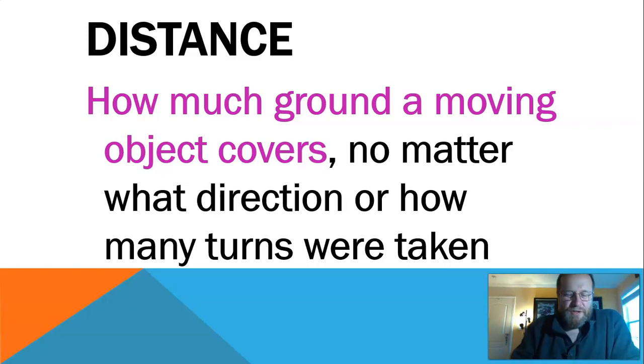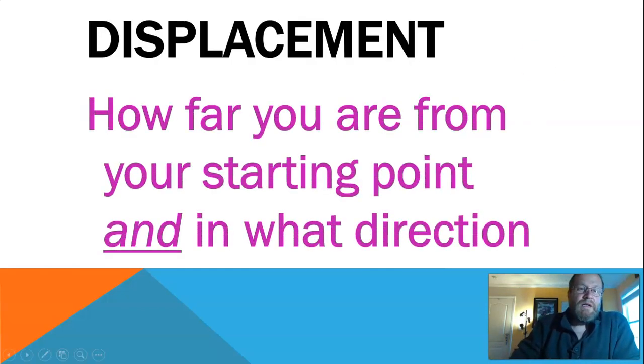When you start thinking, well, they didn't go anywhere. How do we measure the fact that they didn't go anywhere? That brings us to displacement. Displacement is how far you are from your starting point and in what direction. In that race, their displacement at the end of the race when they get the checkered flag is zero. They haven't gone anywhere. Distance was 500 miles. Displacement was zero. Distance is how much ground you covered. Displacement is how far you are from where you started.